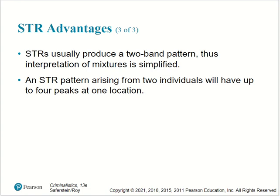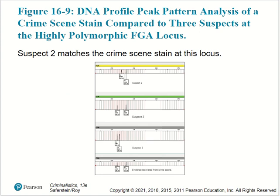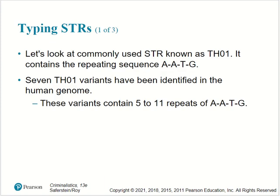STRs usually produce a two-band pattern, so interpretation of mixtures is simplified. An STR pattern arising from two individuals will have up to four peaks at one location. This figure shows a DNA profile peak pattern analysis of a crime scene stain compared to three suspects at the highly polymorphic FGA locus. Suspect two matches the crime scene stain at this particular locus — plural being loci.